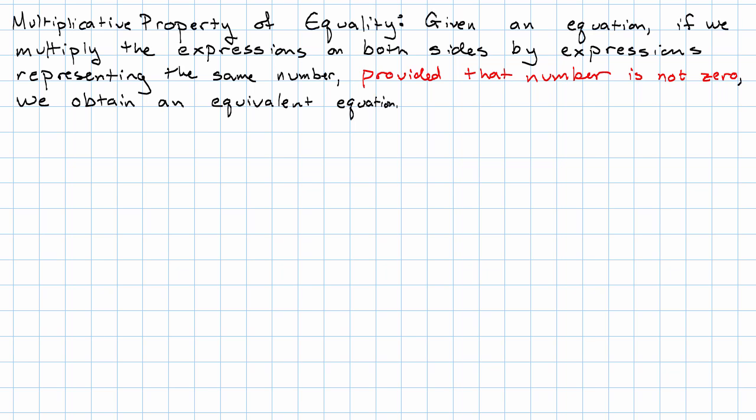Or just to put it in shorter terms, we can multiply both sides of an equation by the same thing, but not by 0.